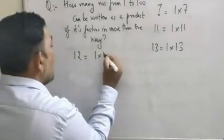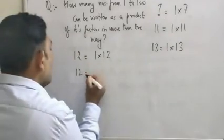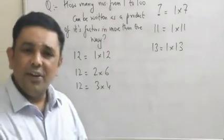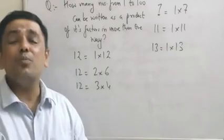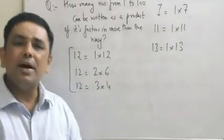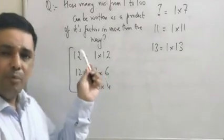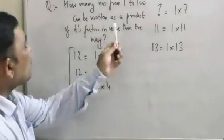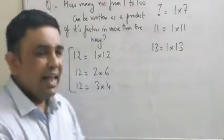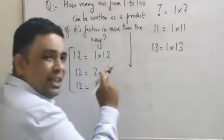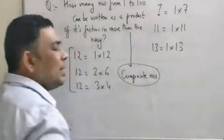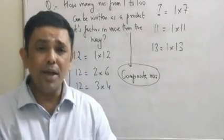What about a composite number? Let us take the example of 12. I can write 12 as 1 × 12, I can write the same 12 as 2 × 6, I can write the same 12 as 3 × 4. You know why? Because 12 is a composite number, so it has got more than 2 factors, and therefore there is more than one way of expressing that number as a product of its factors. So indirectly, this question is asking me: how many composite numbers are there from 1 to 100?